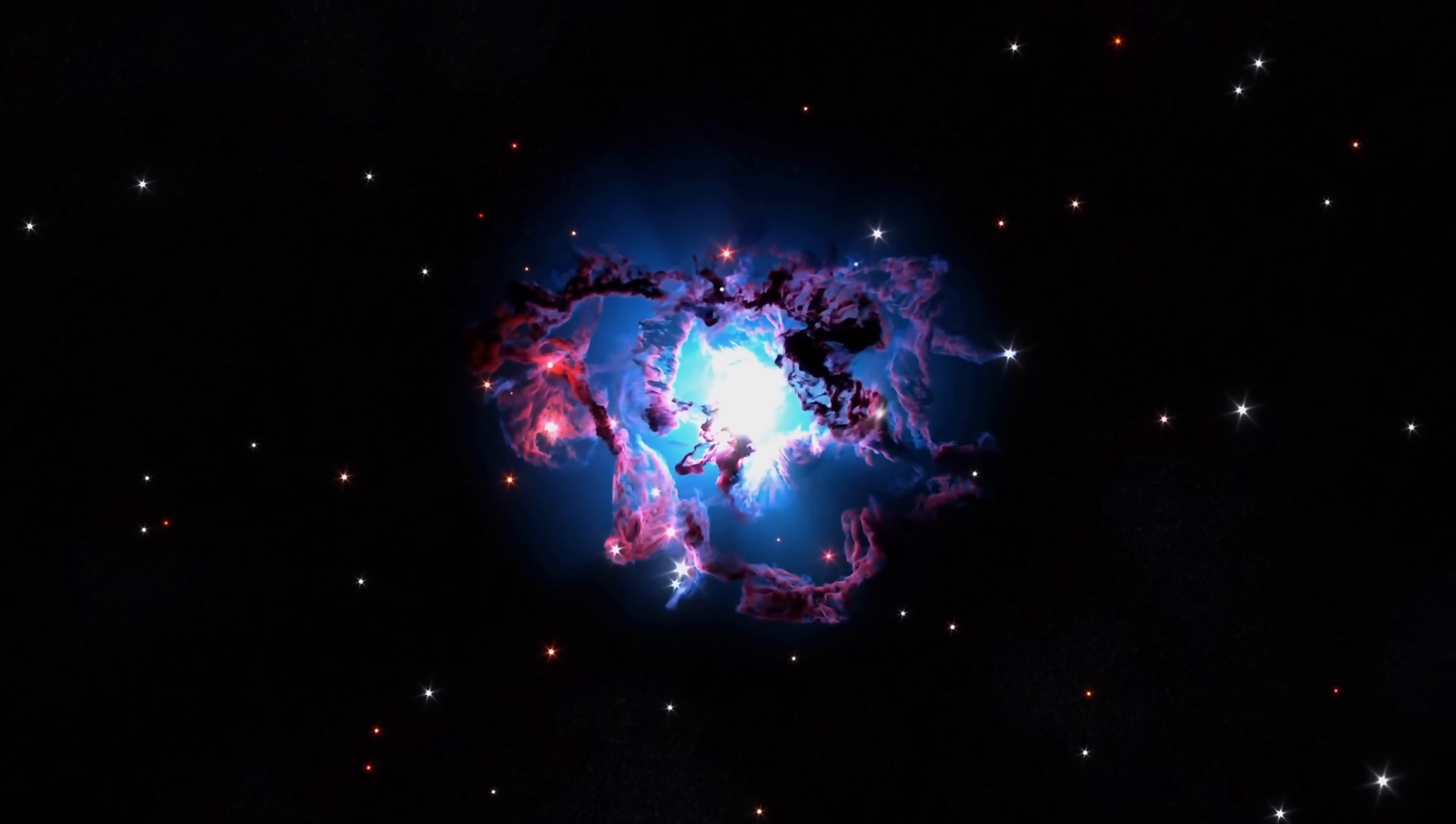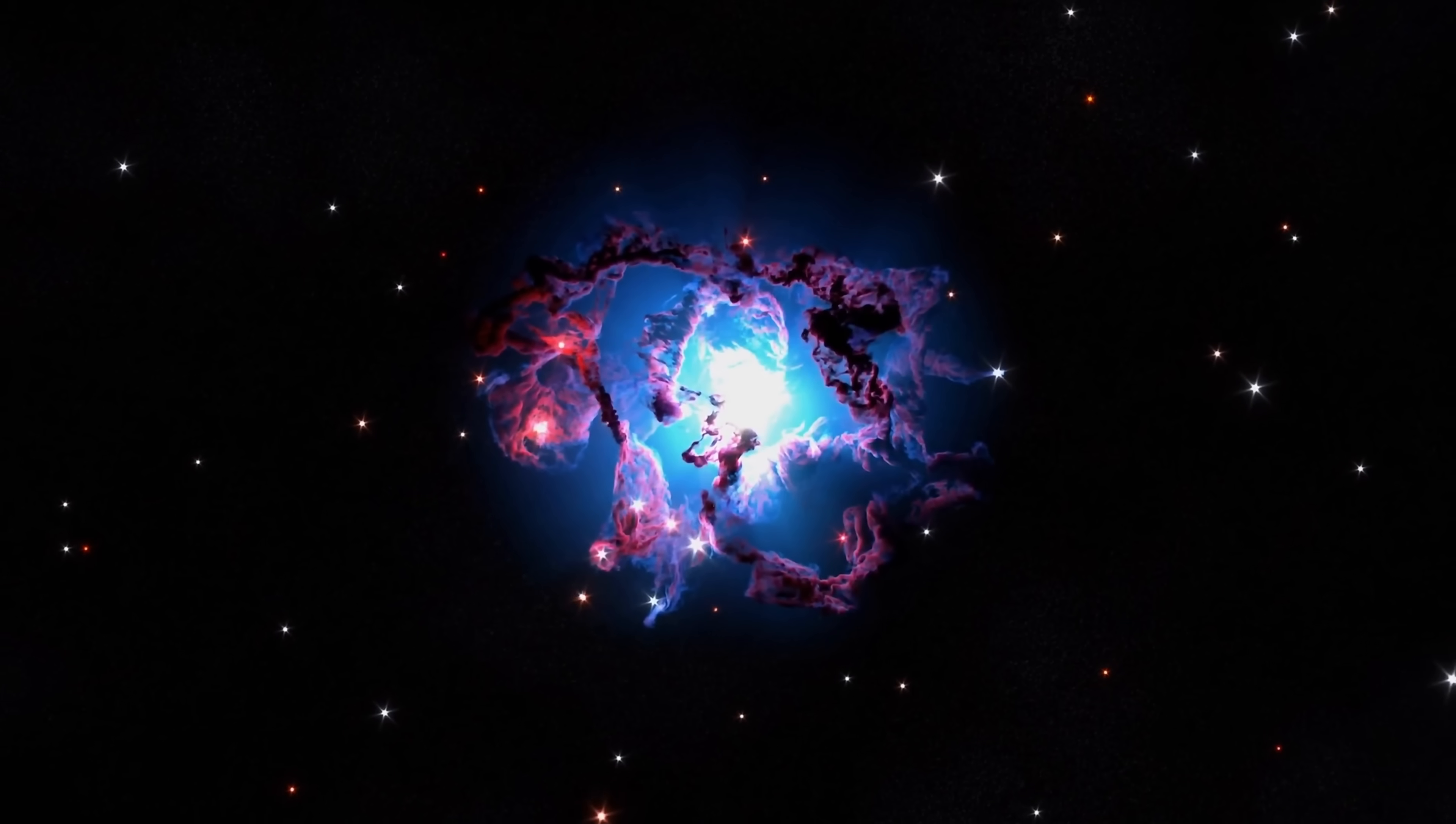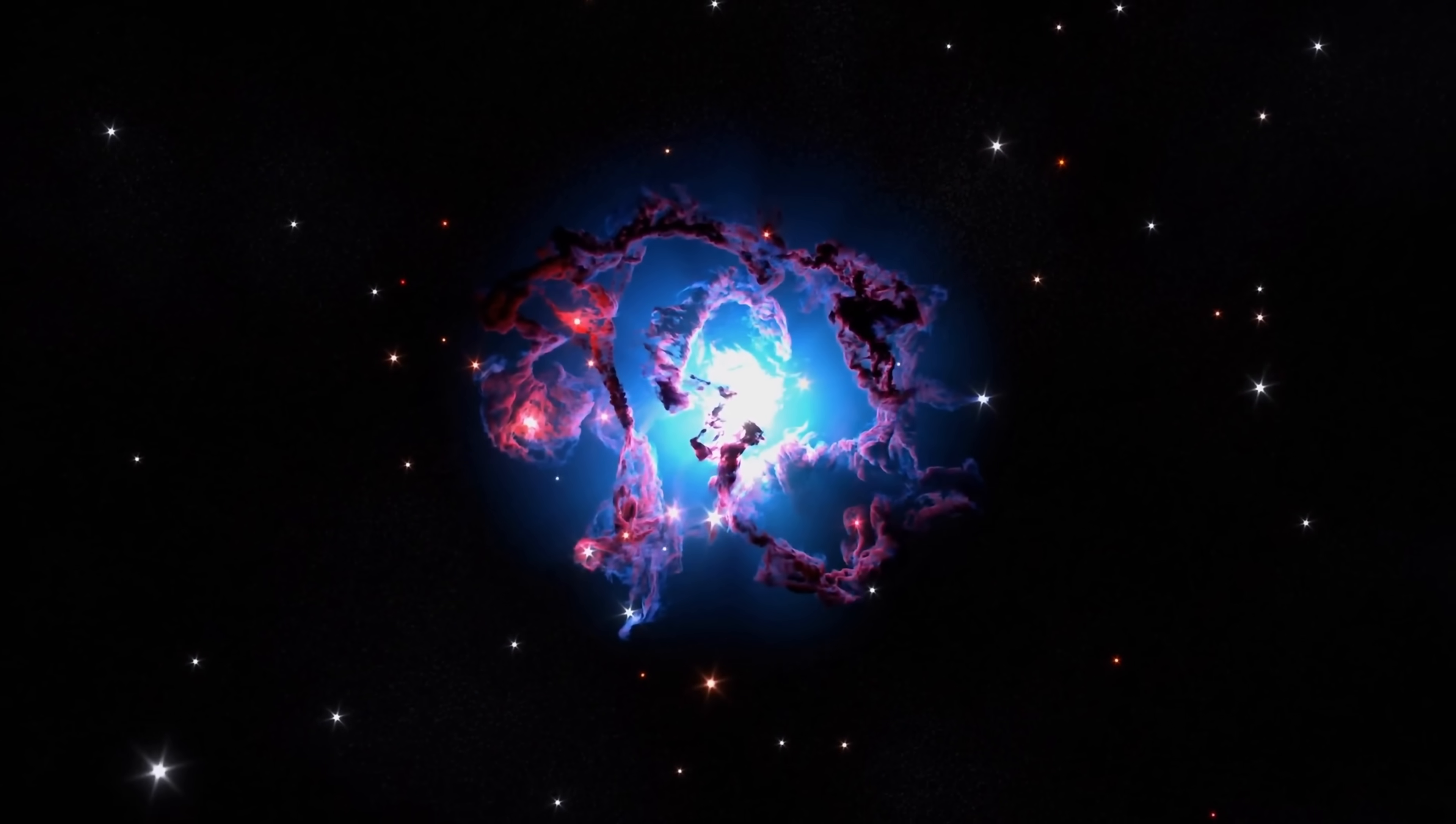The maximum possible spin for a black hole is 1, that's basically almost at the speed of light. And so it wasn't clear what's happening and why so many black holes spin much slower.